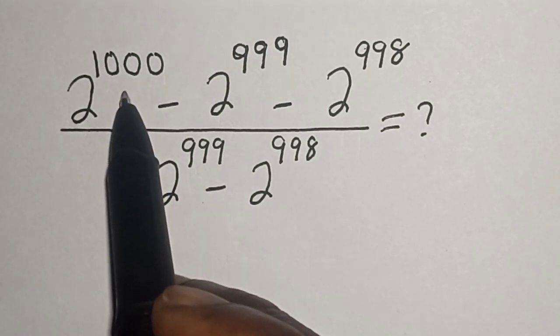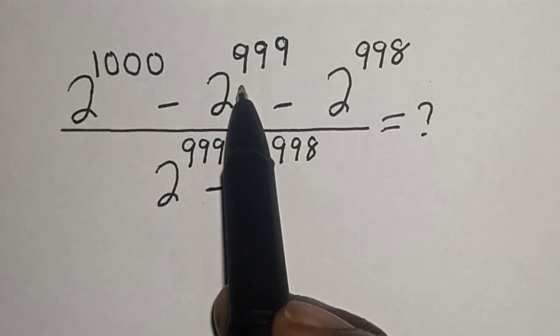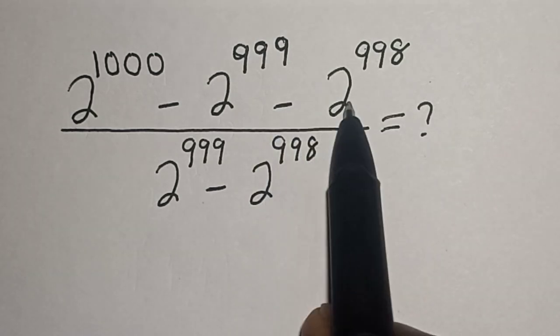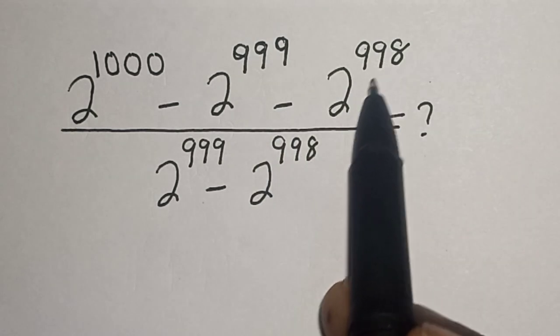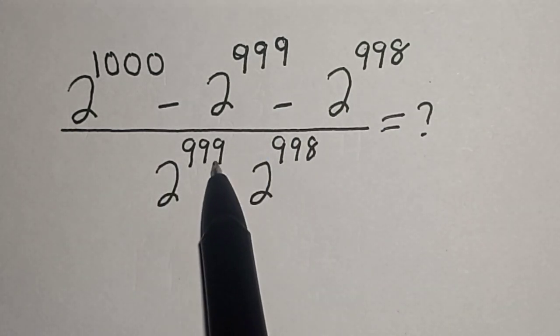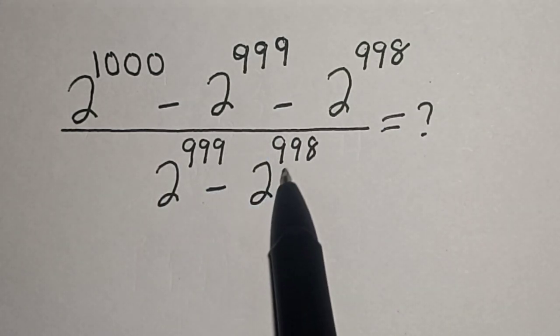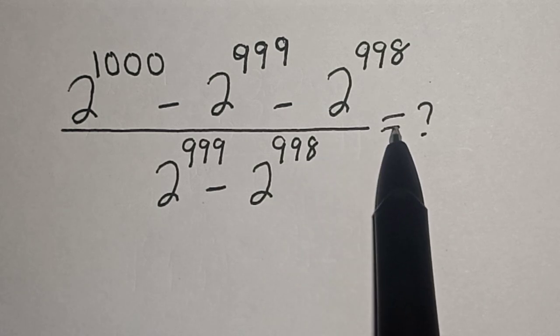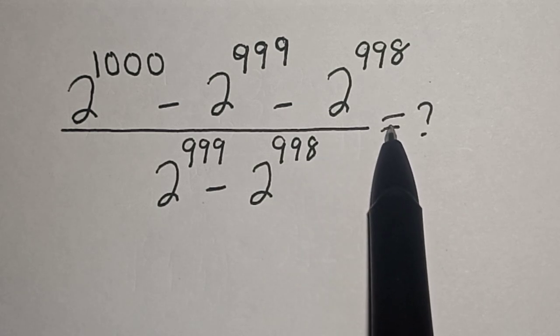2 raised to power 1000 minus 2 raised to power 999 minus 2 raised to power 998, divided by 2 raised to power 999 minus 2 raised to power 998. What is this equal to?